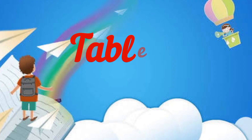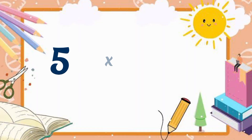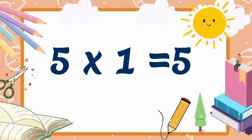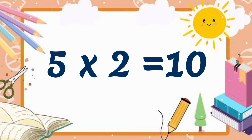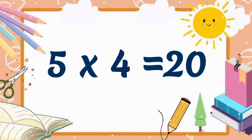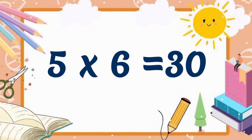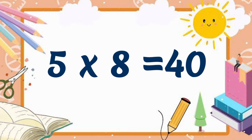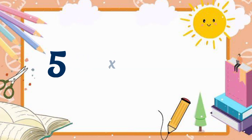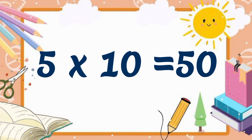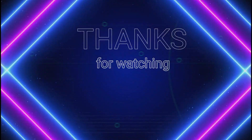Table of 5: 5 1's are 5, 5 2's are 10, 5 3's are 15, 5 4's are 20, 5 5's are 25, 5 6's are 30, 5 7's are 35, 5 8's are 40, 5 9's are 45, 5 10's are 50.